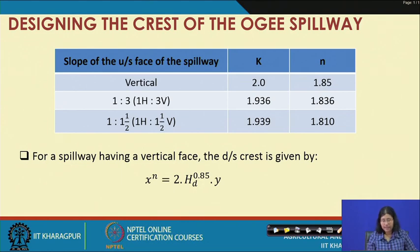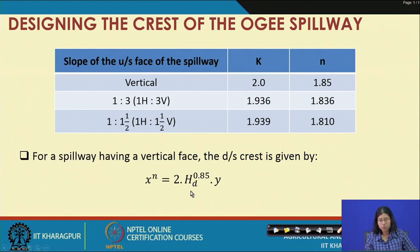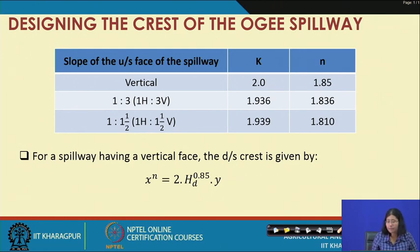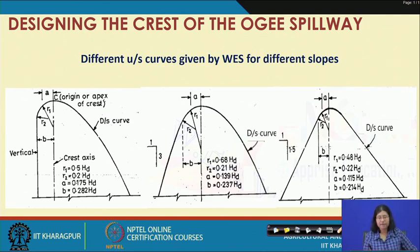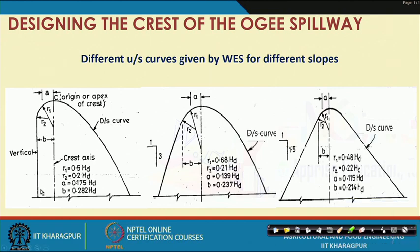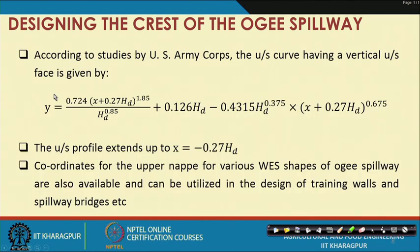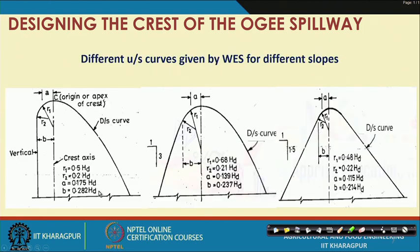For a spillway having a vertical face, the downstream crest is given by the empirical equation x to the power n = 2 H_d to the power 0.85 times y, where y is the total vertical height from the ground surface up to the spillway top. For the vertical face, r1 is 0.5 H_d, r2 is 0.2 H_d, a is 0.175 H_d, and b is 0.282 H_d.